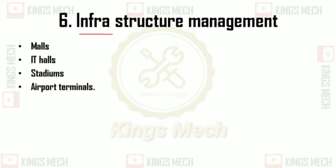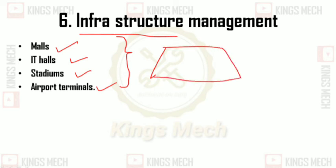After that, Infrastructure Management. This includes Malls, IT Halls, Stadiums, and Airport Terminals as types of application. A Mall is a multiple-number-of-buildings structure. Stadiums host all types of games, and airport terminals are also part of infrastructure management — all these are civil engineering contributions.